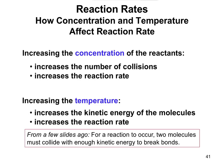If you imagine two people walking blindfolded on a football field, they're unlikely to run into each other. But if you put 100 people out there, the odds of collisions go up a lot because you've increased the concentration. So increasing concentration increases the number of collisions, and the more collisions you have, the faster the reaction rate.